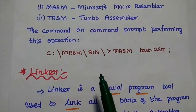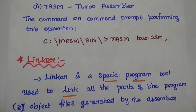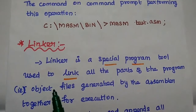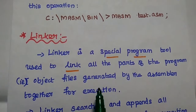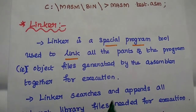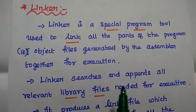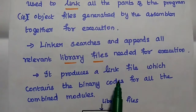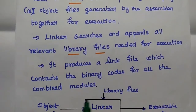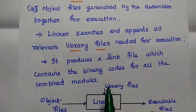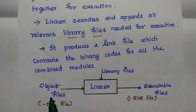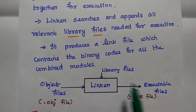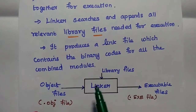After translating the source file into machine code, that machine code file is given as input to the linker tool. It is a special program tool used to link all the parts of the program — that is, object files generated by the assembler — together for execution. It searches and appends all the relevant library files needed for execution, then produces a linked file which contains binary codes for all the combined modules as executable code. In the linker, we give the object file from the assembler as input and get an executable .exe file by appending the relevant library files.